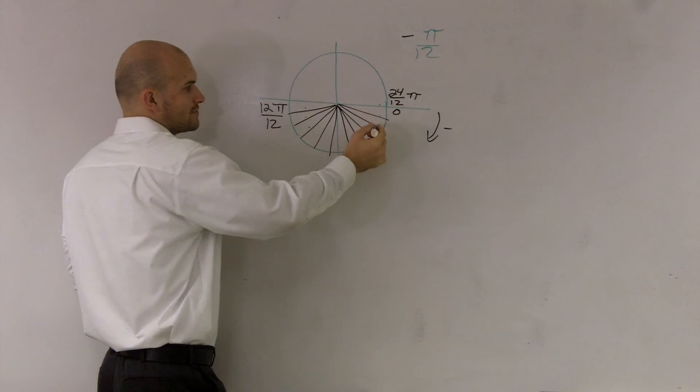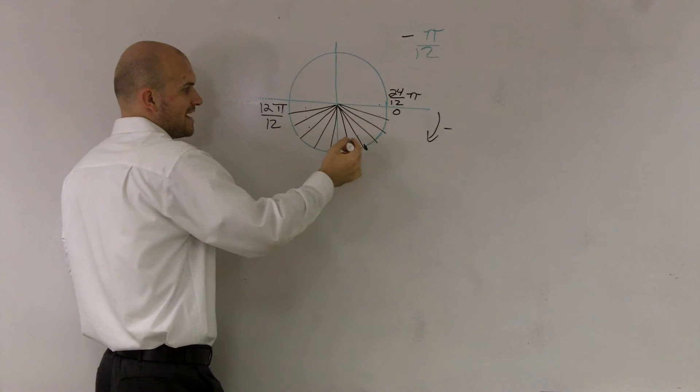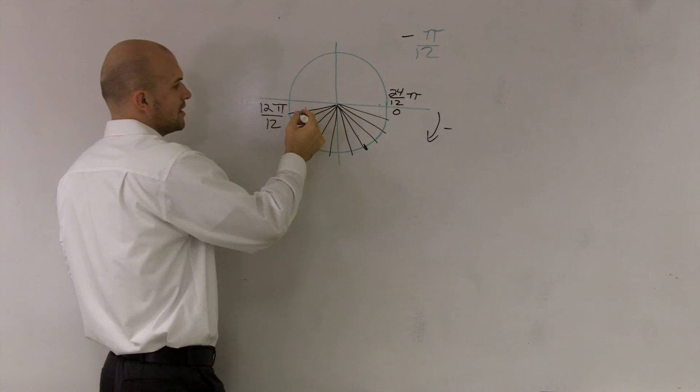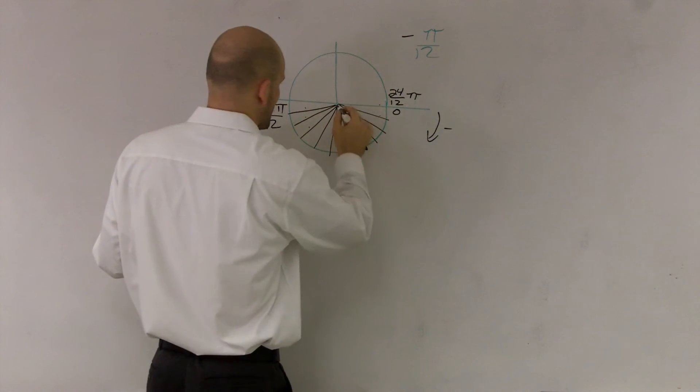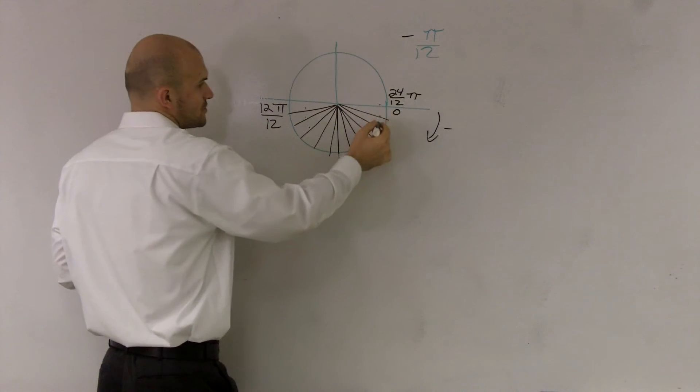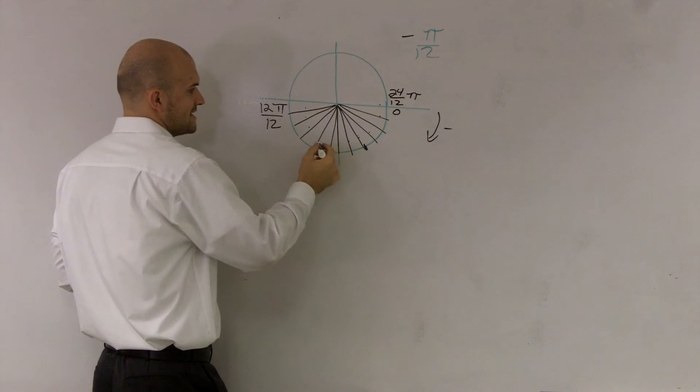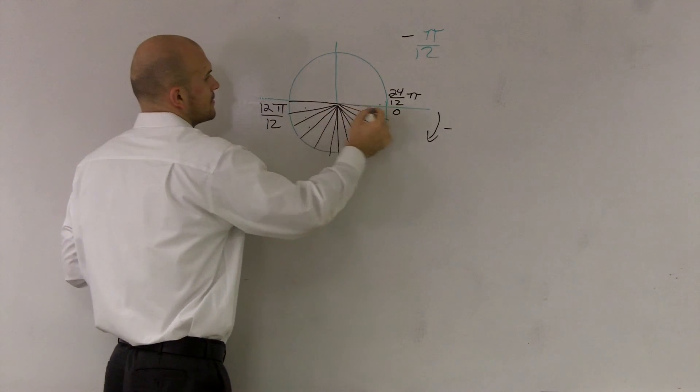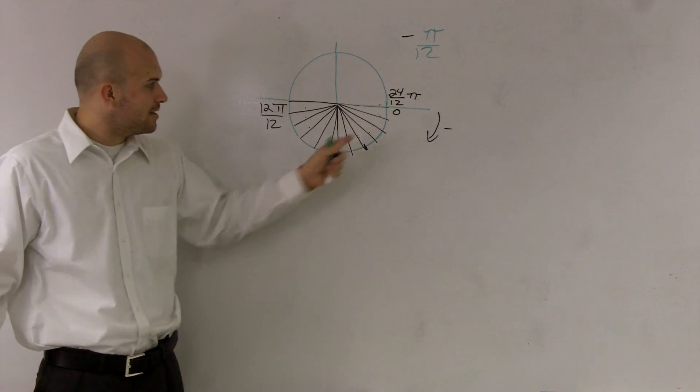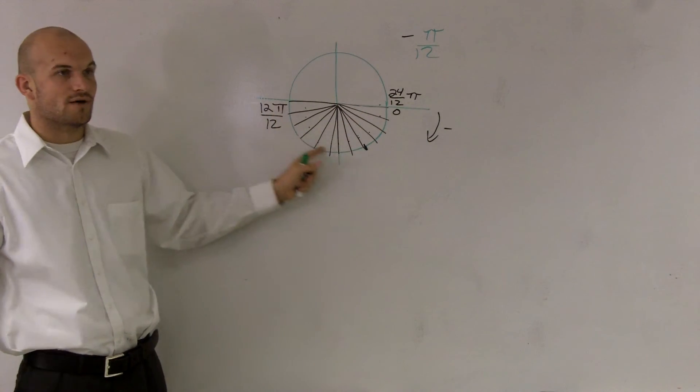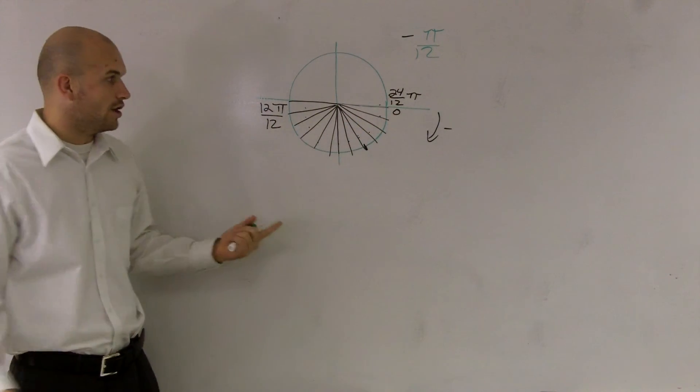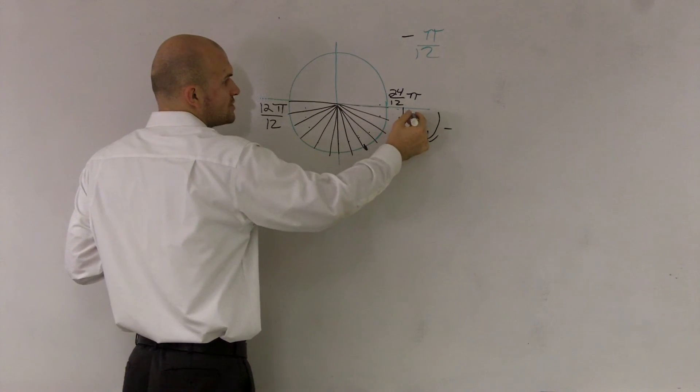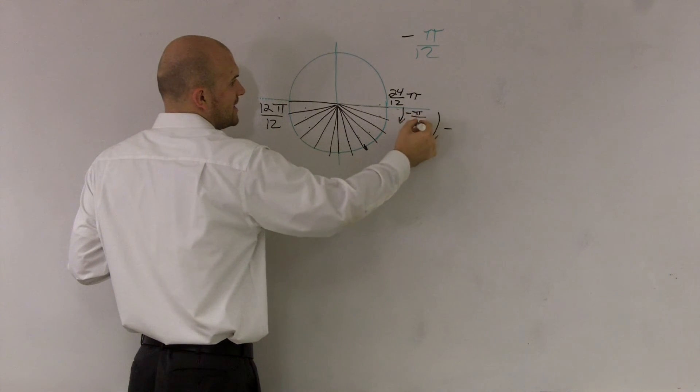So let's count it: 1/12, 2/12, 3/12, 4/12, 5/12, 6/12, 7/12, 8/12, 9/12. Would 1/12 be in the negative direction?